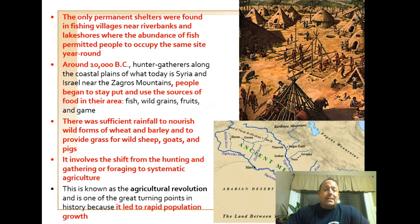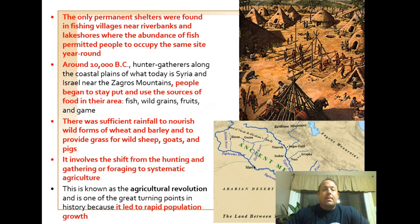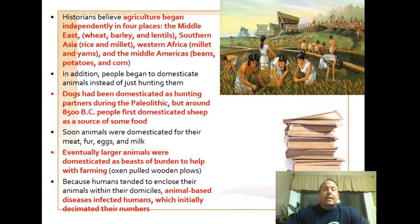The time period of 10,000 BC is important because this is when people began to stay in place. It appears that Mesopotamia, or the Fertile Crescent in the Middle East, is where that first takes place. We see the shift from hunting and gathering to farming — the domestication of plants and animals. The crops that were domesticated were cereal grains, primarily wheat and barley, and in other parts of the world later, rice.